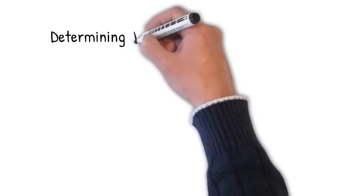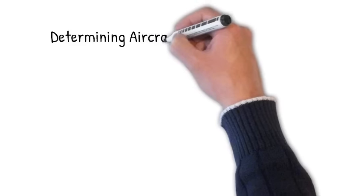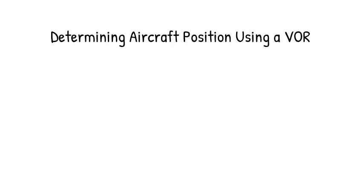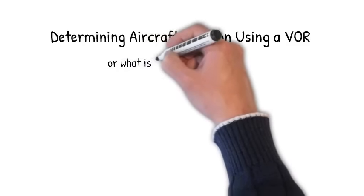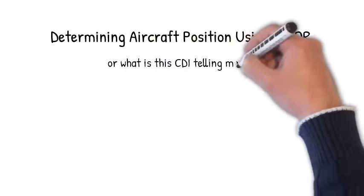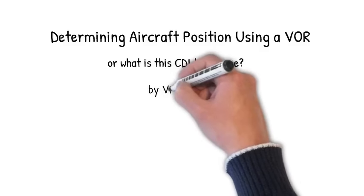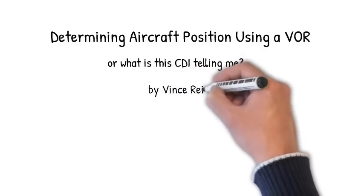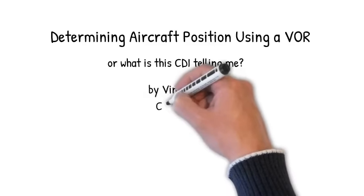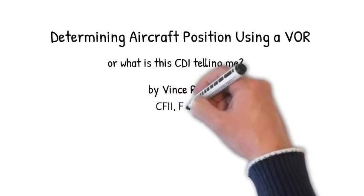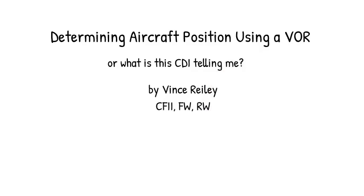Hey folks, this is Vince Riley, CFII fixed wing and rotor wing. I have students, co-workers, and friends approach me all the time asking me to help demystify the VOR and how to determine position using the OBS and CDI — sometimes during a check ride or during a written exam. So I'm going to take a few minutes with these illustrations to demystify the whole process of determining where your aircraft is in relation to a VOR. This presentation is for future private pilots that just haven't mastered the instrument skills, or seasoned pilots that just need a quick review.